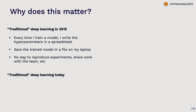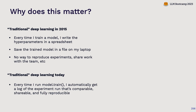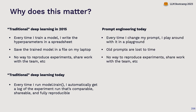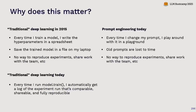Now, if you do traditional deep learning — training or fine-tuning models — you have access to amazing tools where every single time you run model.train, you automatically get a full log of that experiment. It contains all the hyperparameters so you don't have to write them down. It's shareable, comparable, and fully reproducible. Today, I think prompt engineering feels a lot like traditional deep learning did in 2015. Every time I change my prompt, I'll play around with it in the OpenAI Playground. Old prompts and changes I made in the past are lost to time — buried somewhere in a spreadsheet or ChatGPT logs. There's no way to reproduce experiments or share work with a team.